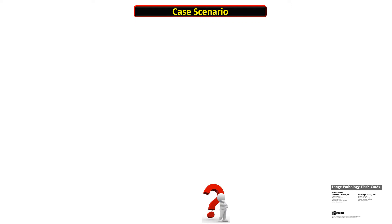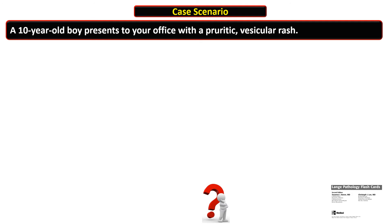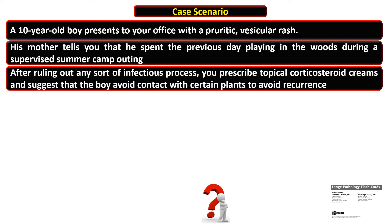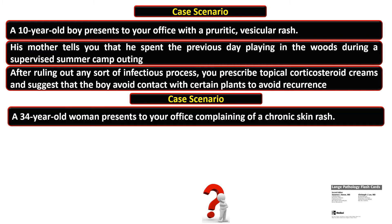Before starting the pathogenetic mechanisms, we will look into two clinical scenarios. The first is a 10-year-old boy who presented with a pruritic vesicular rash. His mother tells you that he spent the previous day playing in the woods during a summer camp outing. After ruling out any infectious process, you prescribe topical corticosteroid cream and suggest the boy avoid contact with certain plants.